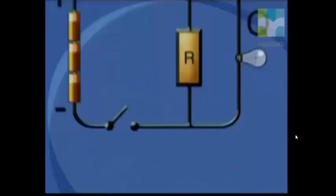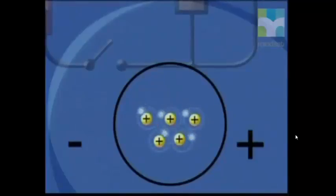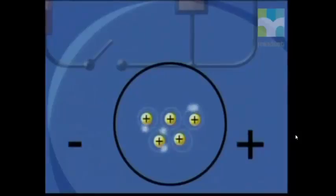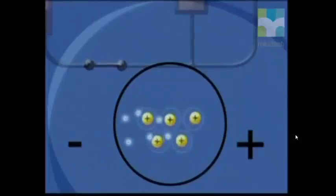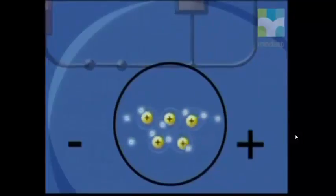For charge to flow, there needs to be a potential difference between two points. In a circuit, charge moves from a point of high potential energy to a point of low potential energy. There is what we call a sea of delocalized electrons in the metal conductor. These electrons are free to move between the atoms. When a circuit is completed and there is a potential difference, the negative electrons are attracted to the positive end of the battery and the charge moves around the circuit. This flow of charge is current.